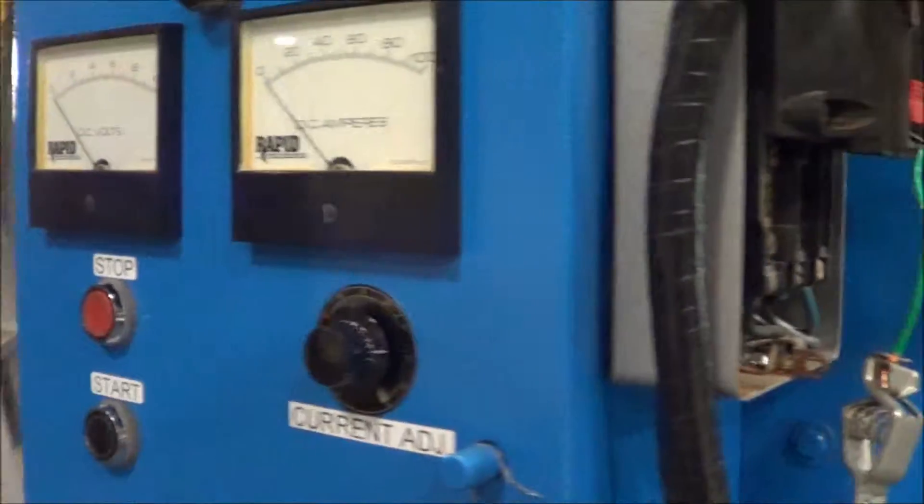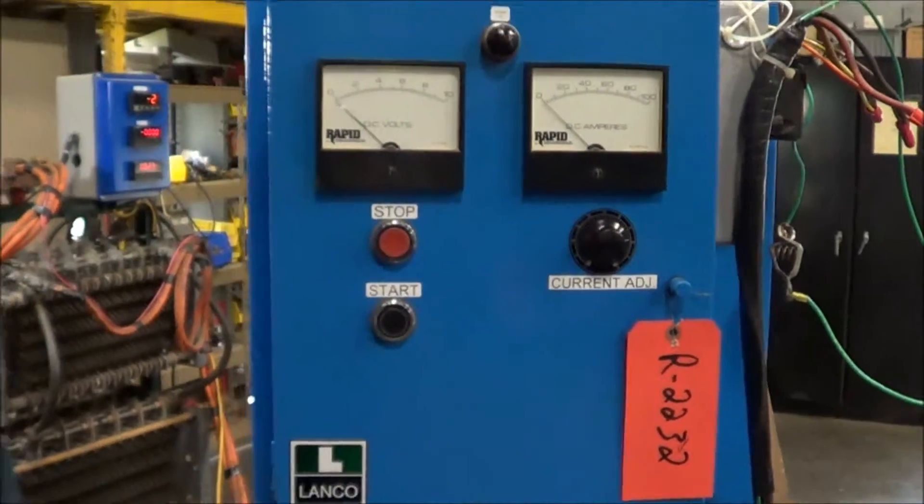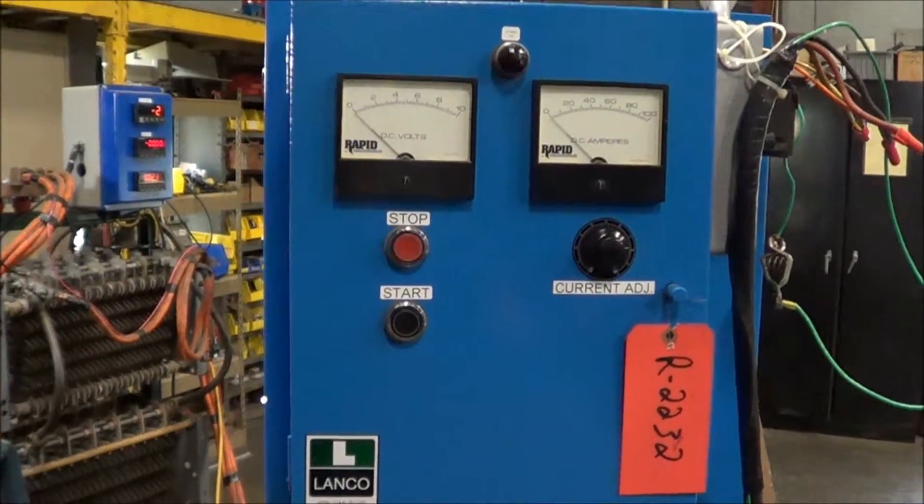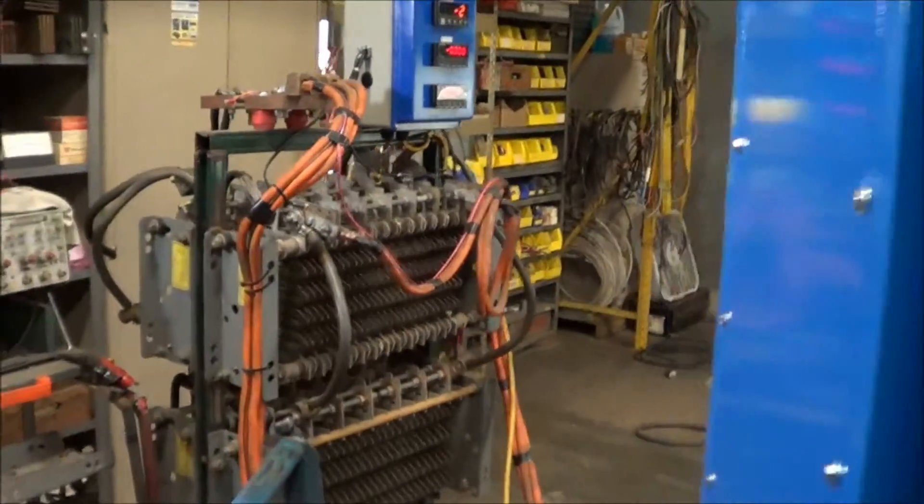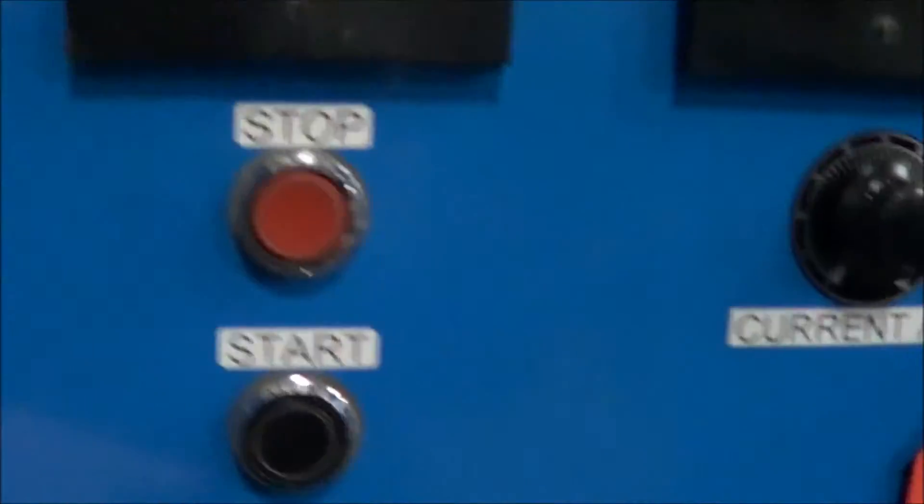This unit does have a filter in it, less than 1% ripple. Also has a motorized variac, so it operates very smoothly. We currently have it hooked up to a load bank, so we will operate it for you now.